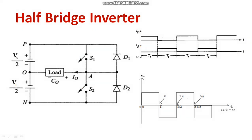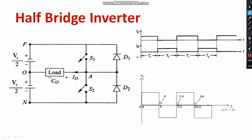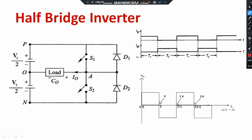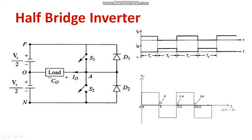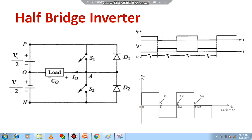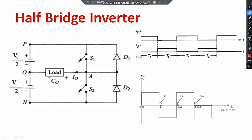How are the output waveforms obtained? In the first case, when S1 is on, we get the output voltage in the positive direction. When S2 is turned on, the output voltage goes negative. The shape of the output is a square waveform — we usually think it's sinusoidal, but it is actually a square waveform.